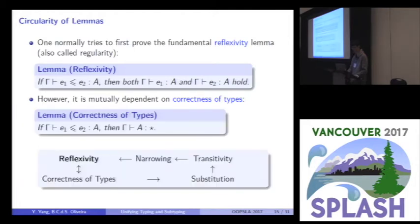So, here it is. The diagram goes like this. If you want to prove some other lemmas, like narrowing, transitivity, or substitution, you have to deal with these two mutually dependent lemmas first. So, this makes the meta-theory very hard to prove.